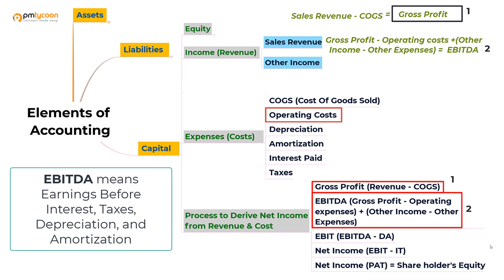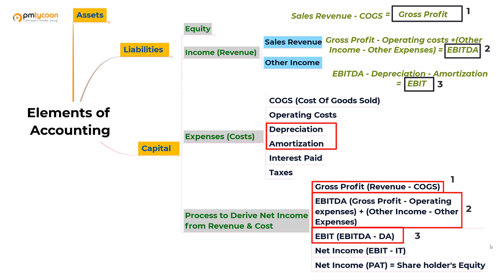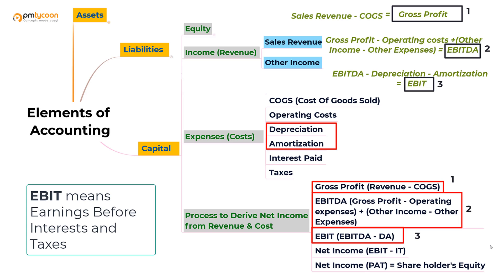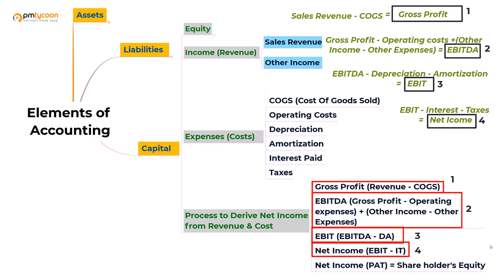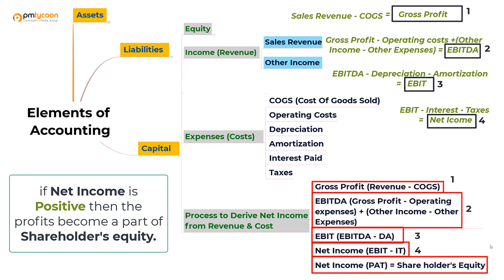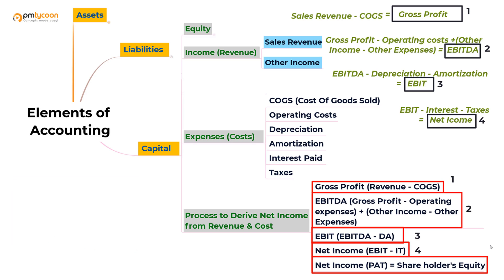EBITDA means Earnings Before Interest, Taxes, Depreciation and Amortization. From EBITDA, if you remove the depreciation and amortization expenses, you get EBIT — Earnings Before Interest and Taxes. If we then remove the interest and taxes from EBIT, we get net income, also called profit after tax. If the net income is positive, this profit becomes a part of the shareholders' equity. All these terms — gross profit, EBITDA, EBIT, and net income — are especially important, and corporates and investors focus on each of these items.